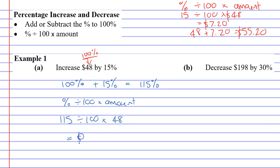If you work this out, you will get $55.20. You will get what we were looking for instead of the $7.20.